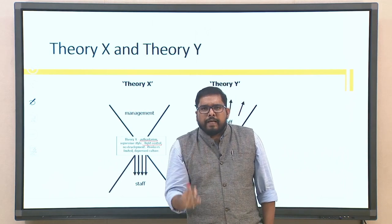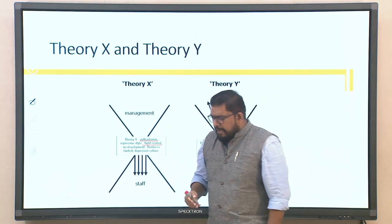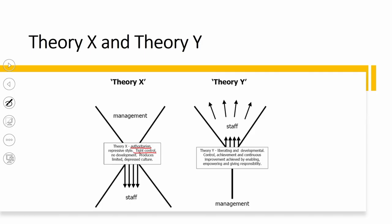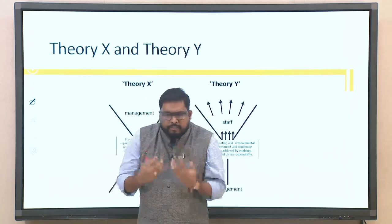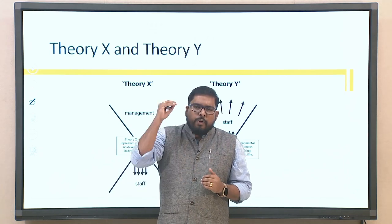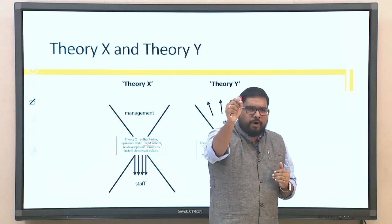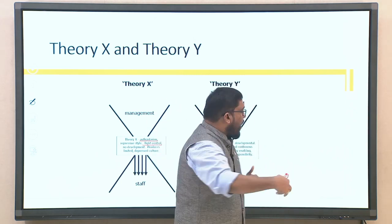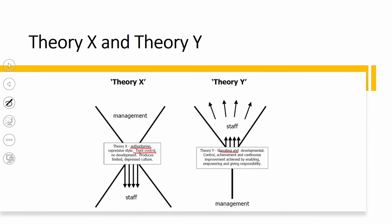Theory X is top-down, where management is authoritarian and repressive with tight controls — leading to a depressed culture where someone is always monitoring you. Theory Y, on the other hand, assumes individuals are very hardworking, born to work, and passionate about what they do. They do not need external direction; they are in a more bottom-up, liberating, and developmental environment focused on achievement and continuous improvement.